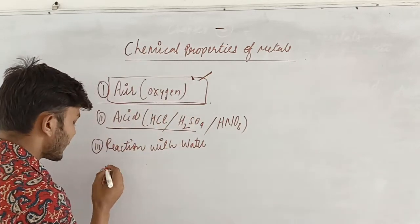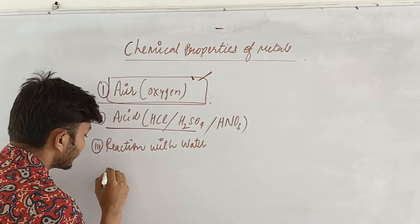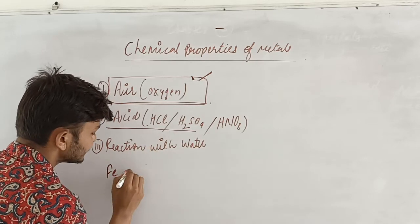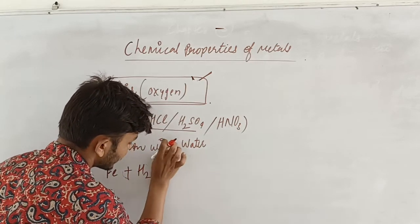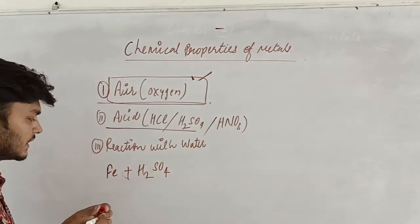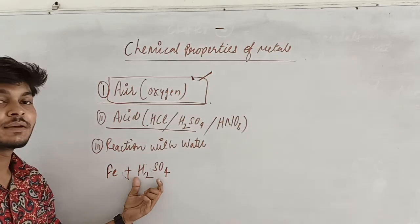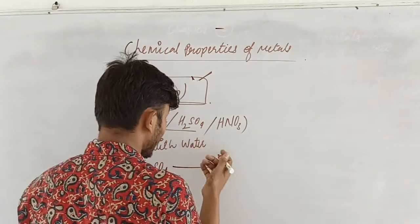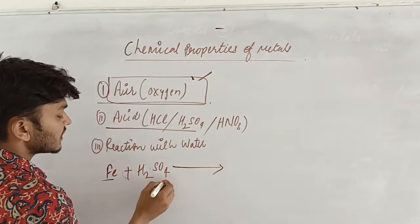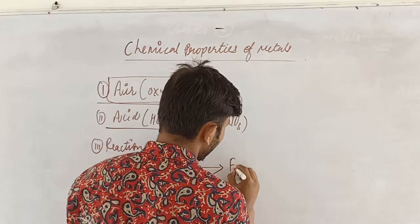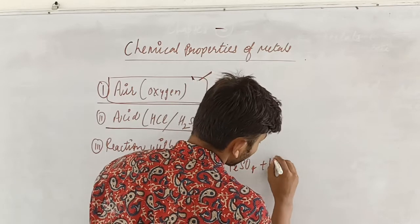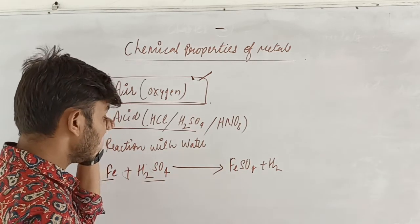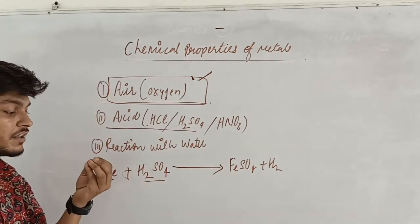Let's take an example of iron. Ferrous iron is reacting with sulfuric acid, H2SO4. Whenever metal reacts with acid, it releases a gas with a pop sound. That gas is hydrogen. So metal is reacting with the acid and releases the gas.